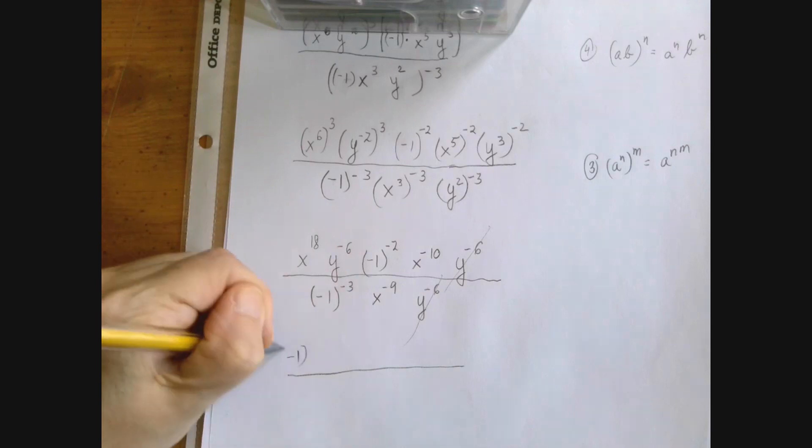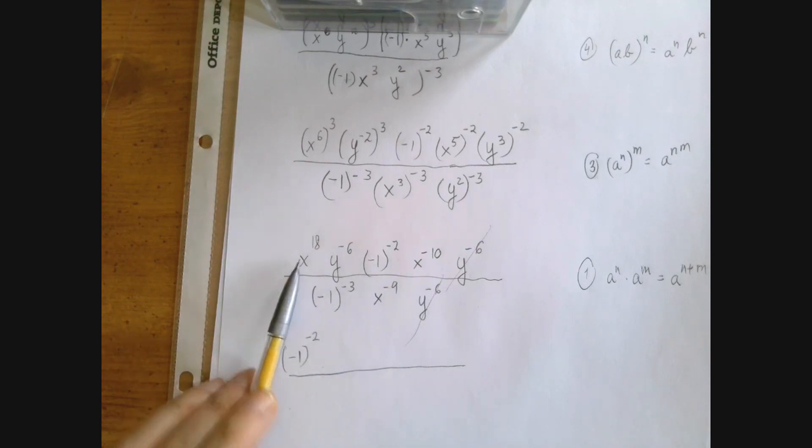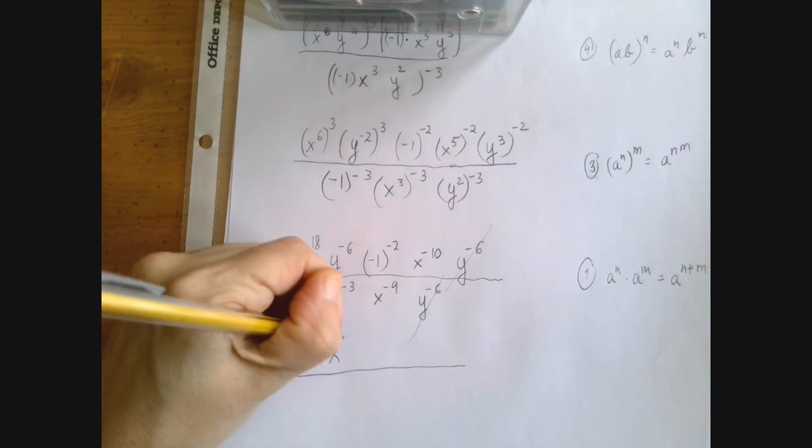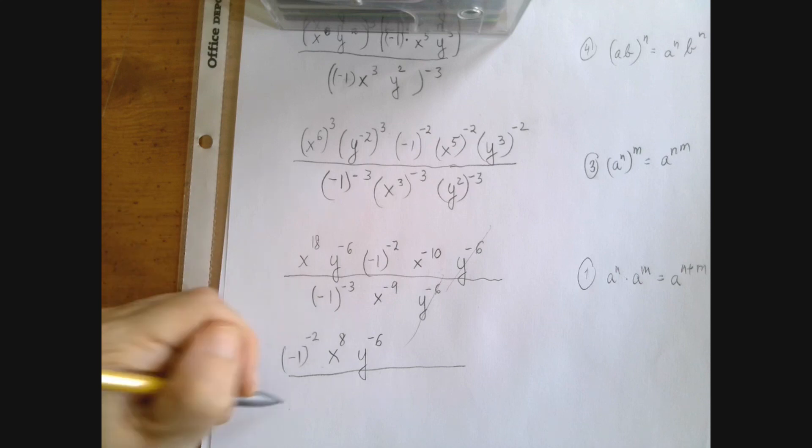So we have a negative 1 to the minus 2. Of course, if the base is common, we can add the exponents. So x to the 18 plus x to the minus 10 is x to the 8. And y was alone. So it's getting shorter. Downstairs we already had that.